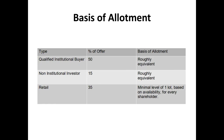Now let's know about the basis of allotment. For qualified institutional buyer, the percentage of offer is 50 and the basis of allotment is roughly equivalent. For non-institutional investor, the percentage of offer is 15 and the basis of allotment is roughly equivalent. For retail, the percentage of offer is 35% and the basis of allotment is minimal level of one lot based on availability for every shareholder.